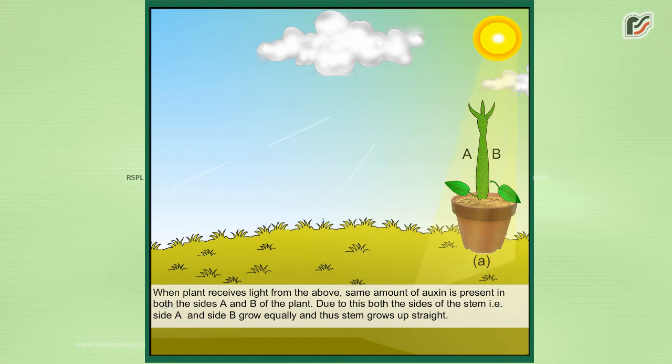the sides A and B of the plant. Due to this, both sides of the stem, side A and side B, grow equally and thus the stem grows straight up.